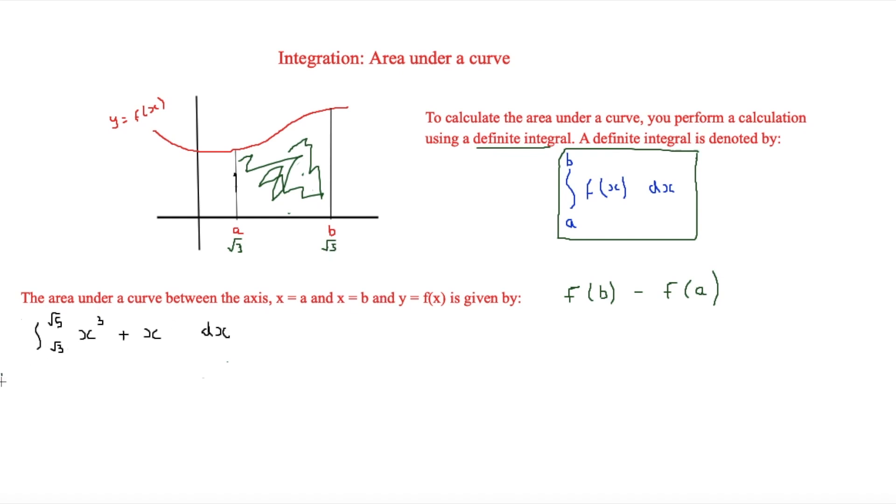But first of all we're going to integrate x cubed plus x. And we looked at how to do integration last lesson, so if you're stuck on this then look at the previous video. But this will integrate to give 1 quarter x to the 4 plus a half x squared.